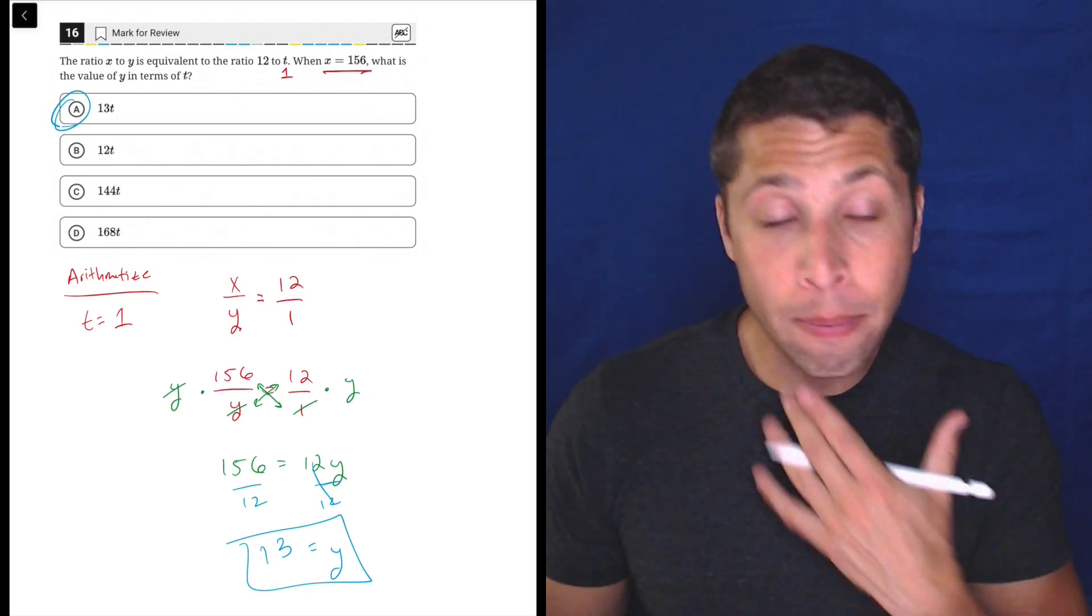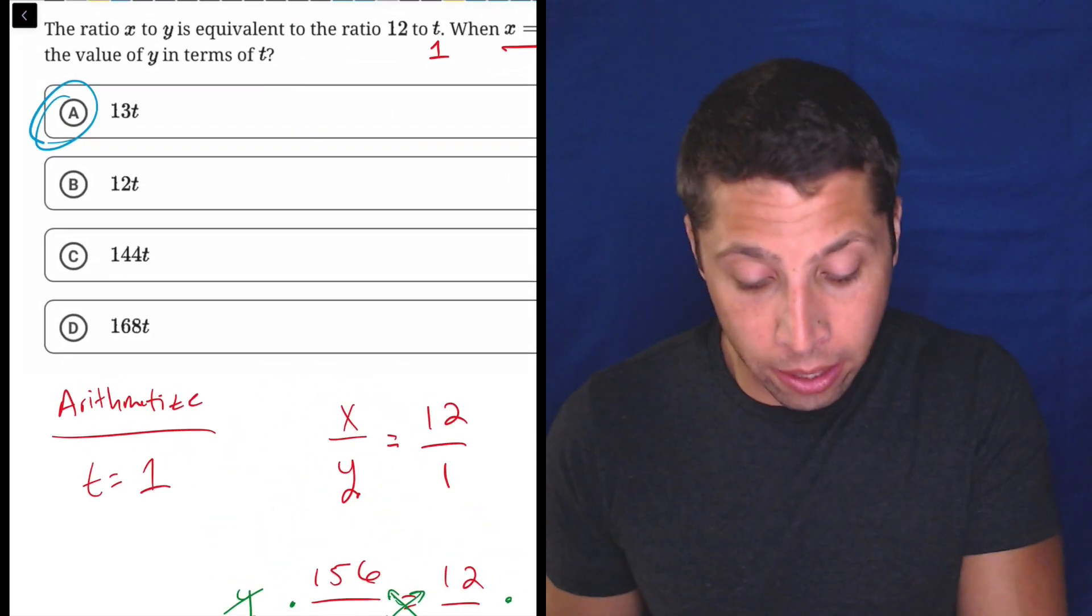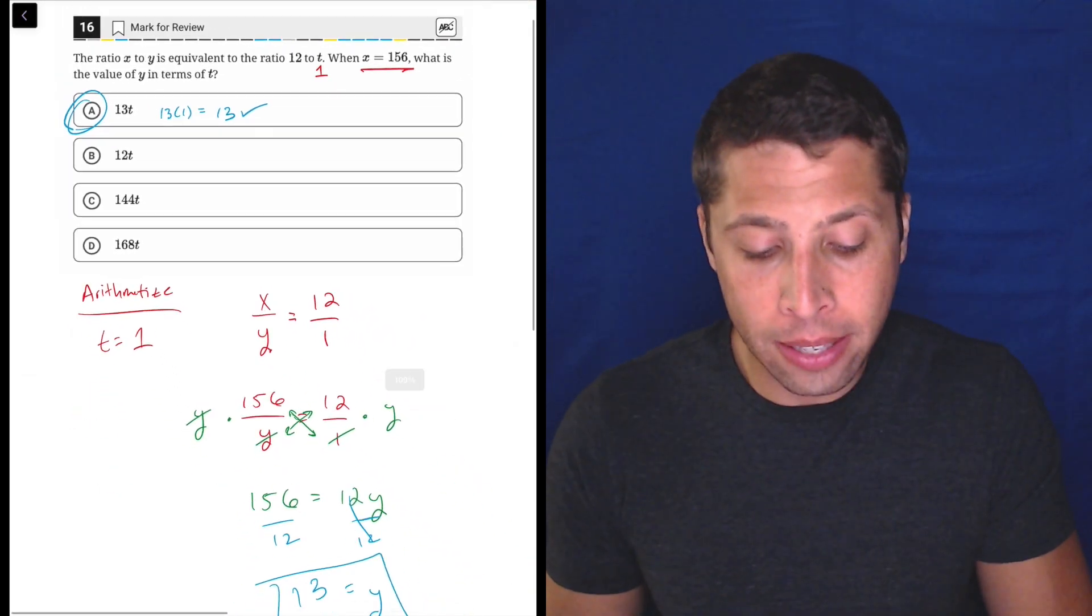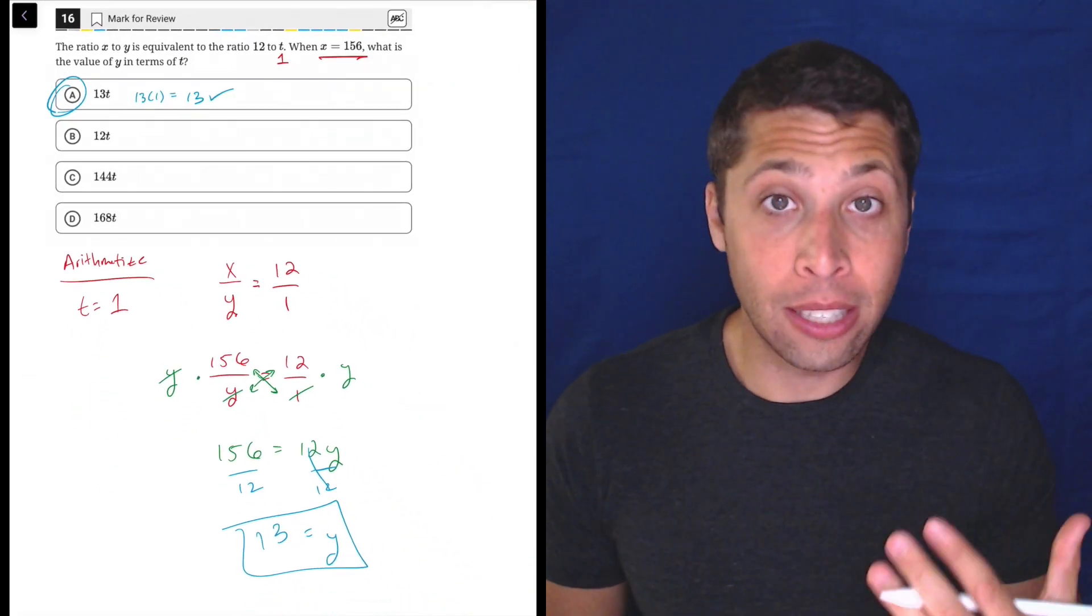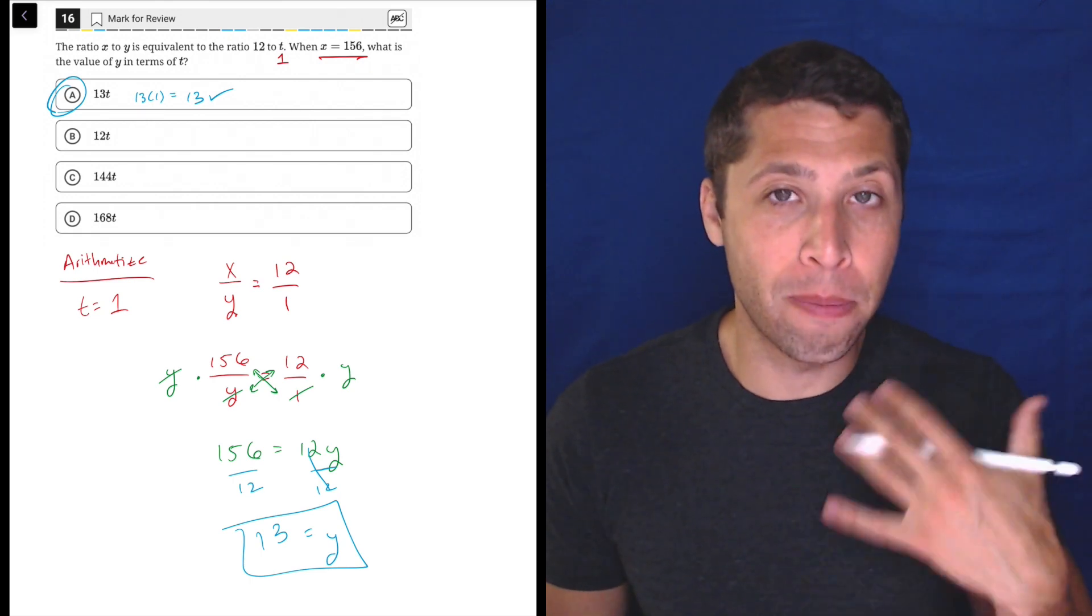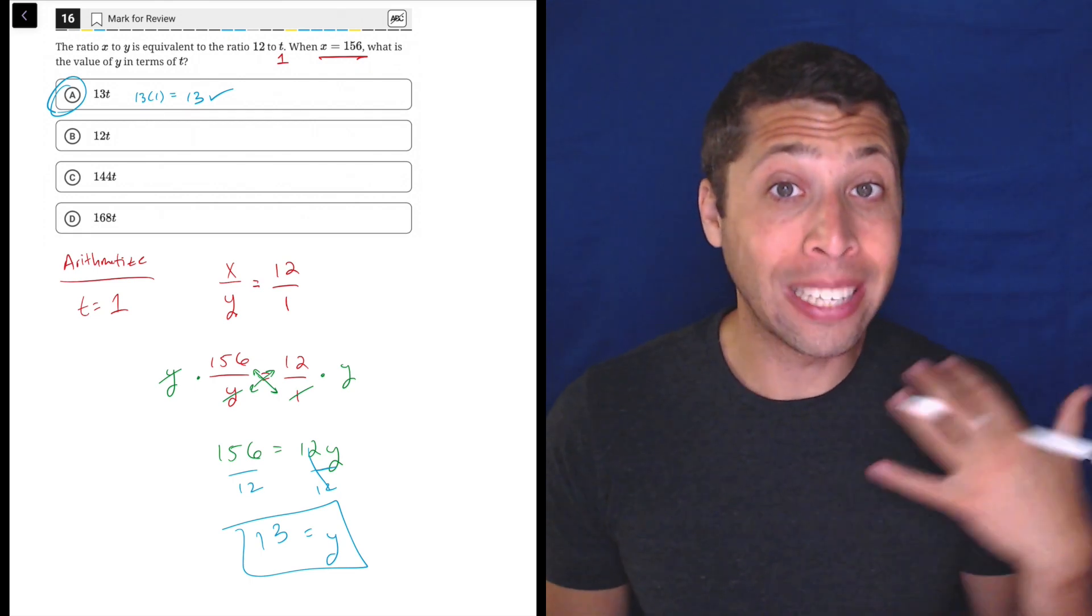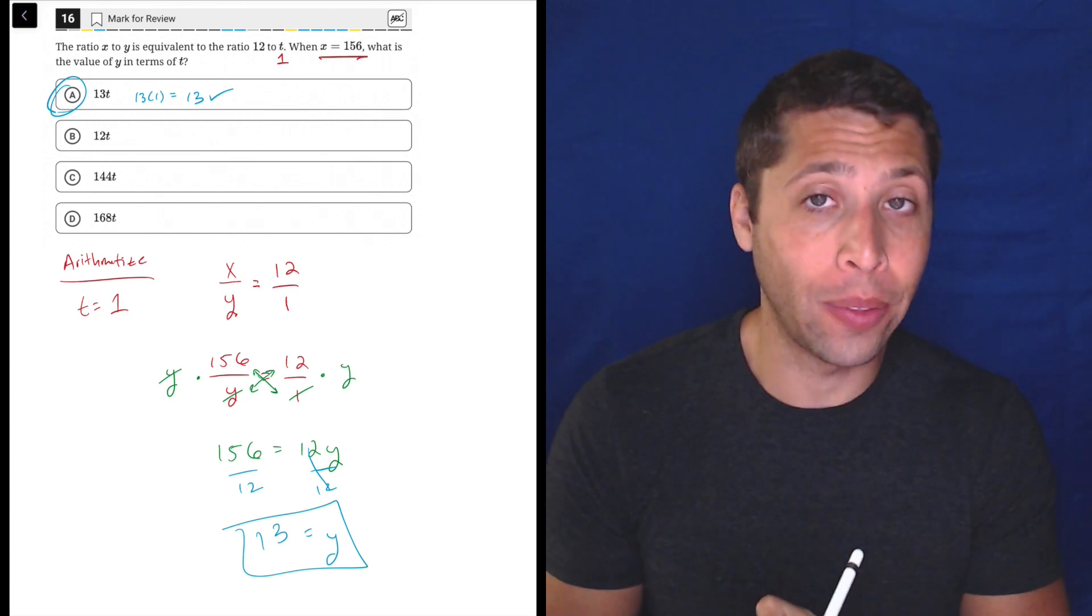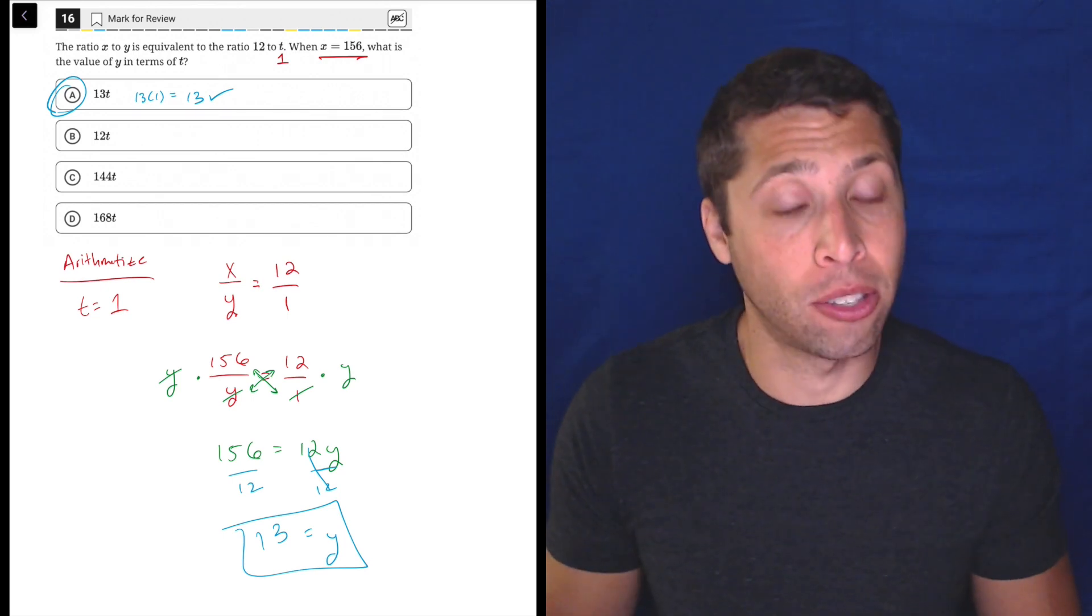And again, notice the t didn't matter because if we substituted 1 in for t, this would be just 13 times 1, which is 13. So when we made t into 1, we were basically just picking a number that would make the t disappear. If we had picked a different number, we'd have to work it back into the answer choices as well at the end, but it still would give us the same answer.